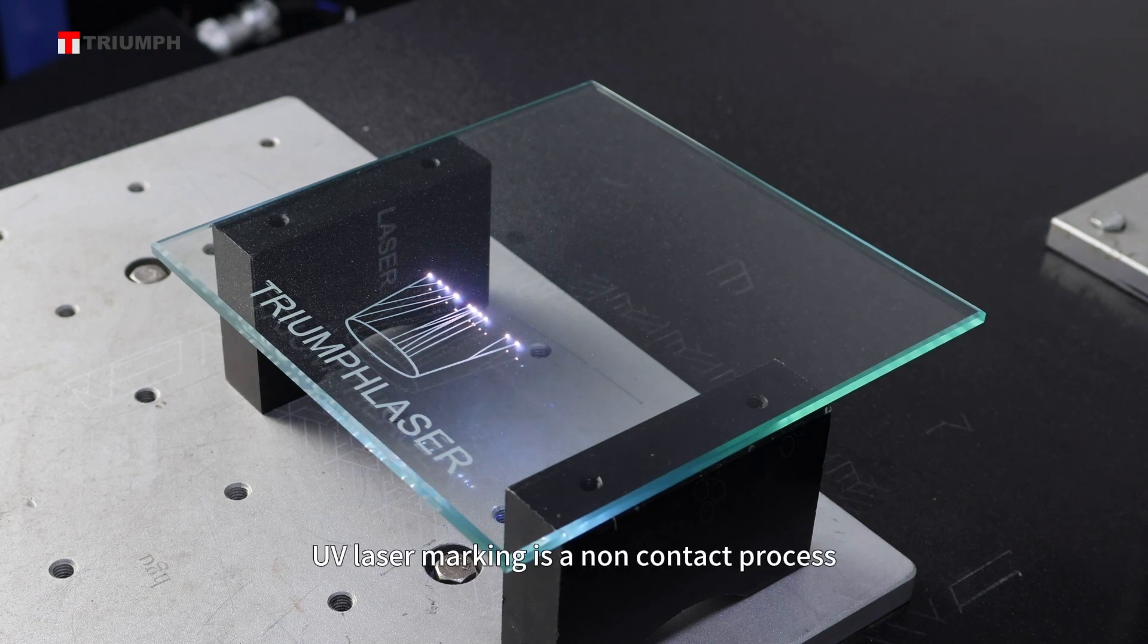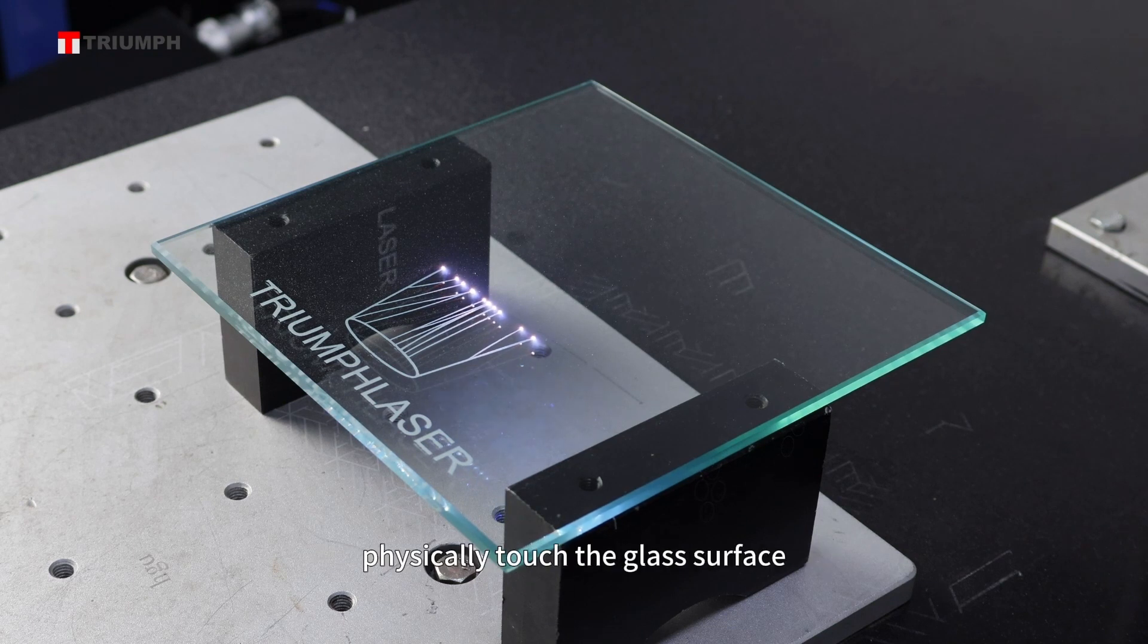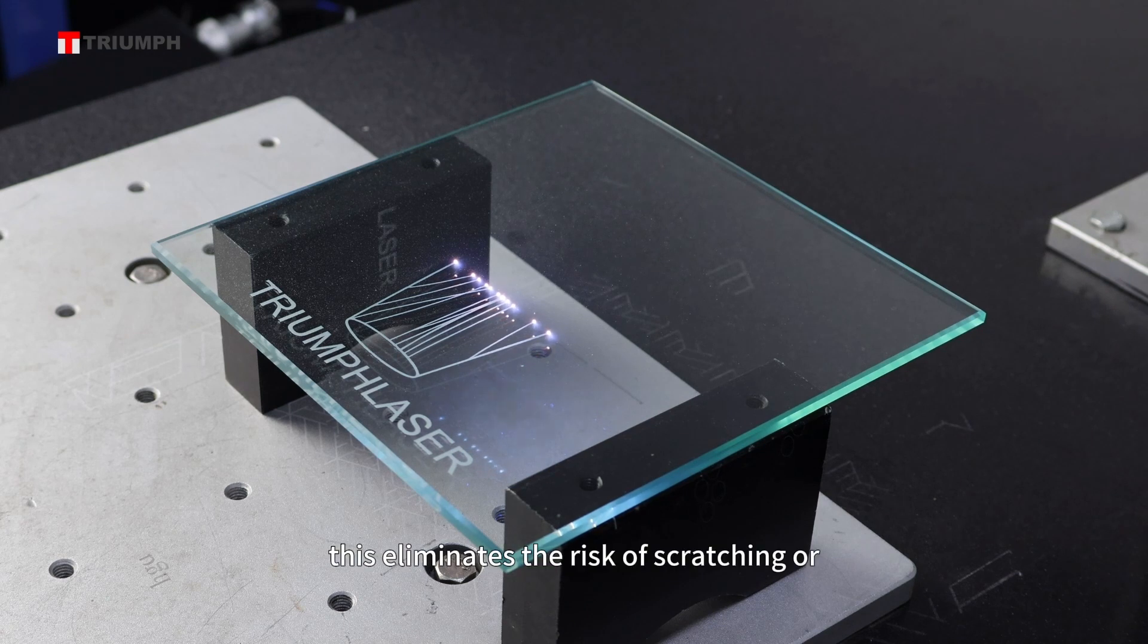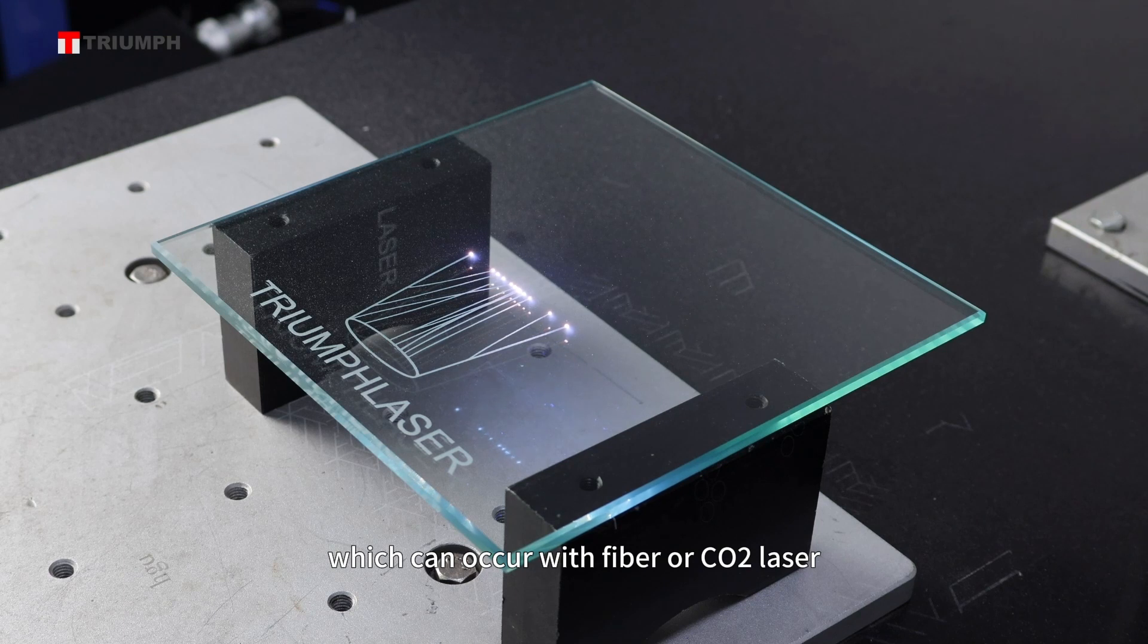Non-contact marking. UV laser marking is a non-contact process, meaning the laser beam doesn't physically touch the glass surface. This eliminates the risk of scratching or damaging the glass, which can occur with fiber or CO2 lasers.